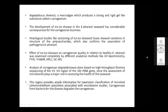We collected samples from that area and conducted studies specifically on ice-ice disease sampling. The development of ice-ice disease in Kappaphycus alvarezii seaweed has considerable consequences for the carrageenan business. Historical studies and sectioning of ice-ice disease tissue showed variations in the structure of polysaccharides, which confirms the association of pathogens in the seaweed. The effect of ice-ice disease on carrageenan quality was examined by different analytical methods including UV spectroscopy, FTIR, NMR, HPLC, and GCMS.